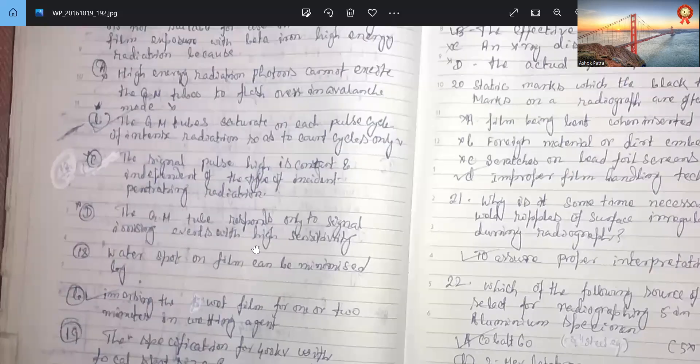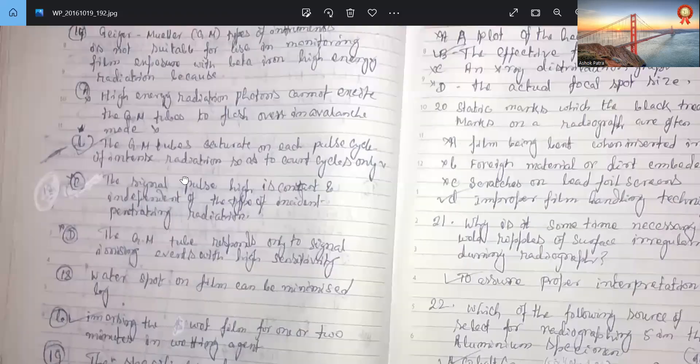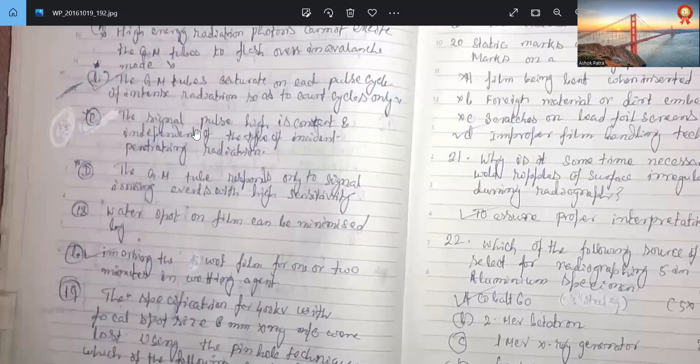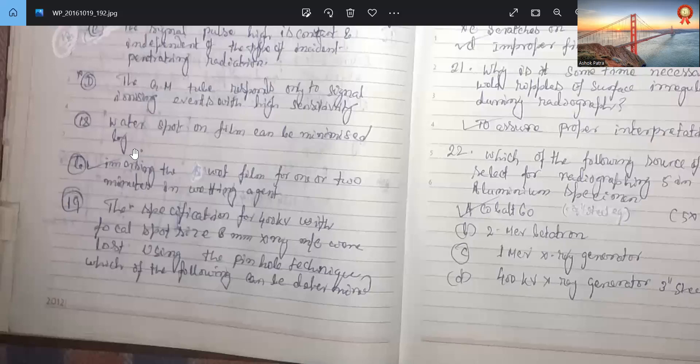Then comes water spot on the film can be minimized by immersing the wet film for 1 or 2 minutes in wetting agent.